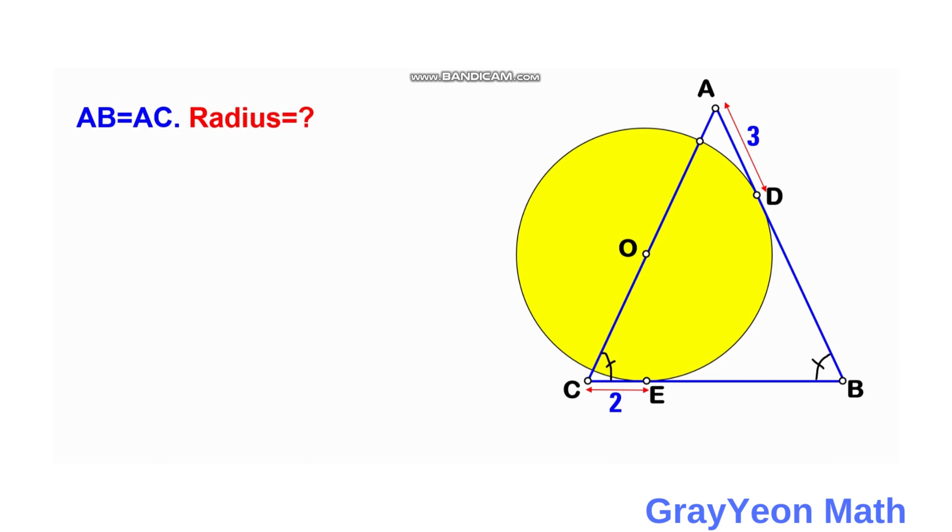Next, we can draw a line from O to D. Since this is the tangent point, this angle will be 90 degrees. Same with the point of tangency at E, we can draw a line from O to E and this will be perpendicular.